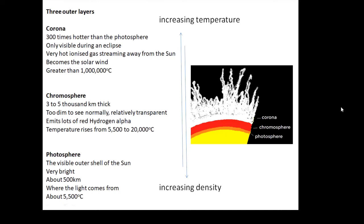We have the chromosphere underneath - the sphere of color. It's about 3,000 to 5,000 kilometers thick. Normally we can't see the chromosphere because the photosphere underneath is so bright. It's relatively transparent and emits lots of hydrogen alpha. As we move away from the Sun it gets hotter, from about 5,500 degrees centigrade up to about 20,000 degrees centigrade.